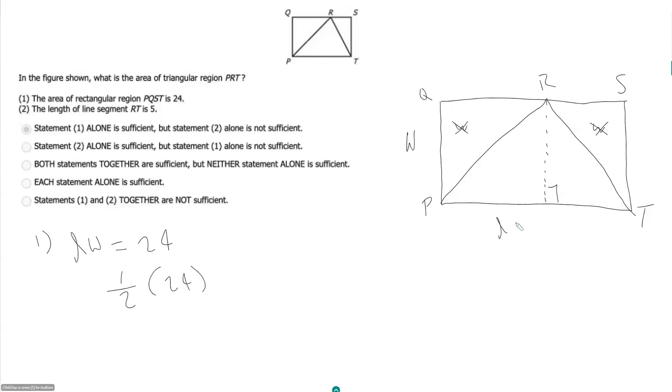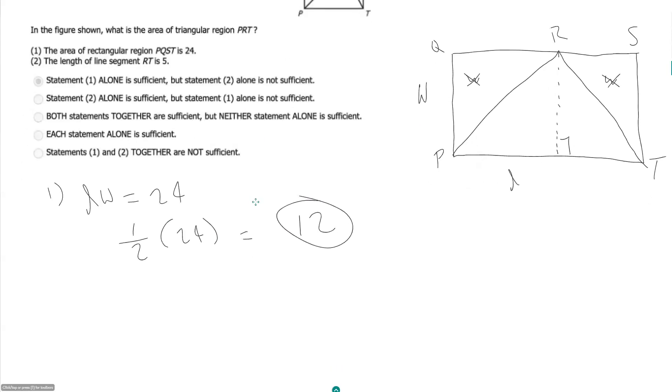This is sort of telling me my base times my height is equal to 24 without necessarily knowing what your base is or what your height is. So this is telling me the area of triangle PRT is 12. And therefore, the statement is sufficient.